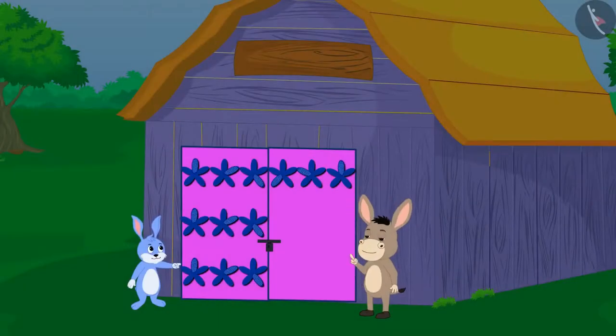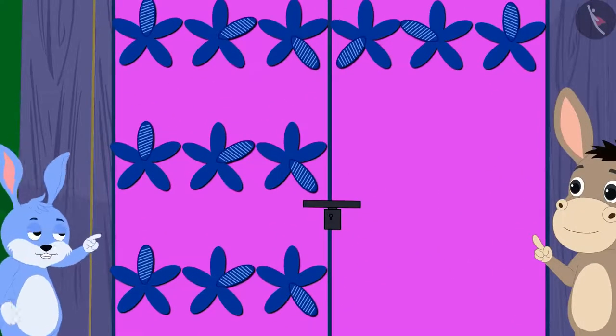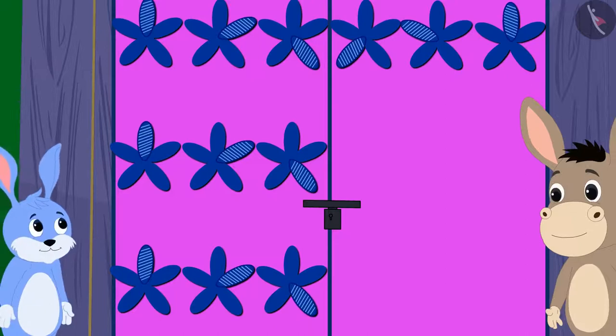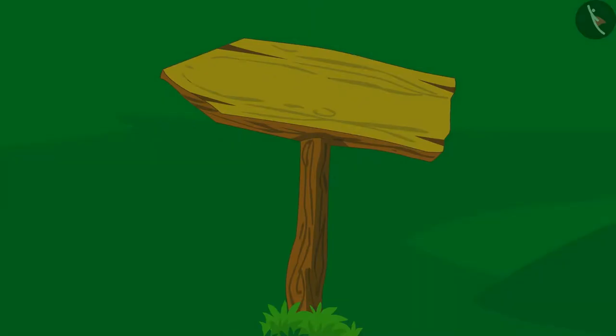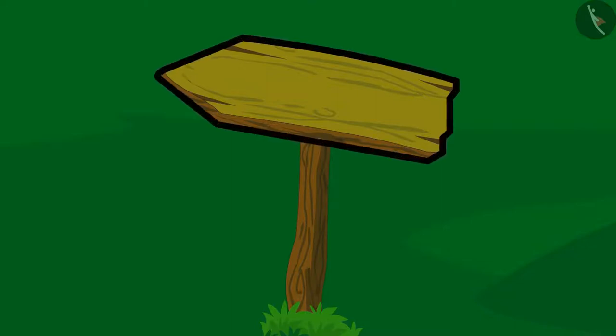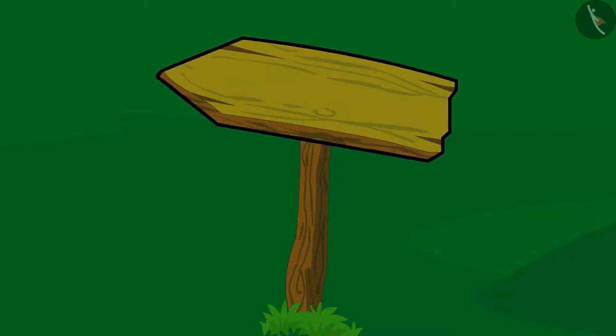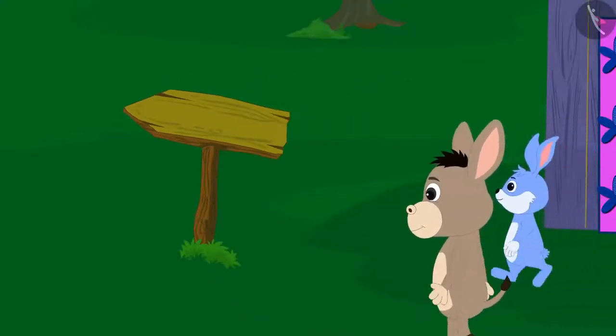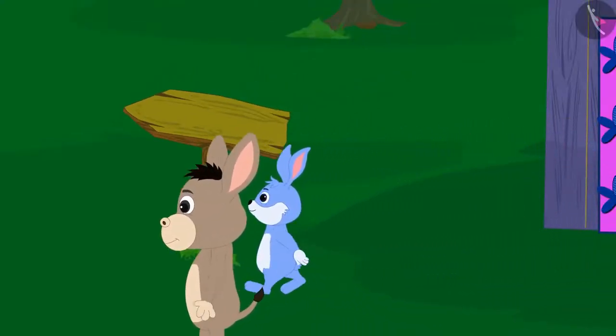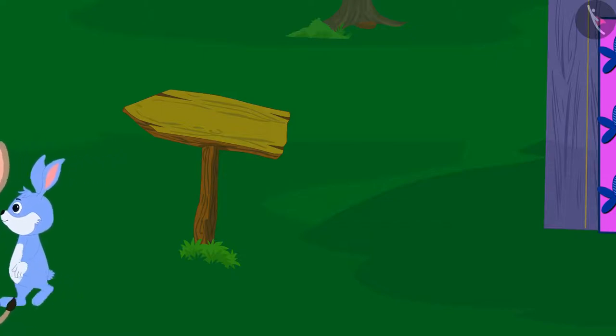As soon as Bhola and Banni completed the pattern on the door, they magically saw an arrow sign on the way out. Bhola and Banni quickly walked in the direction of that arrow.